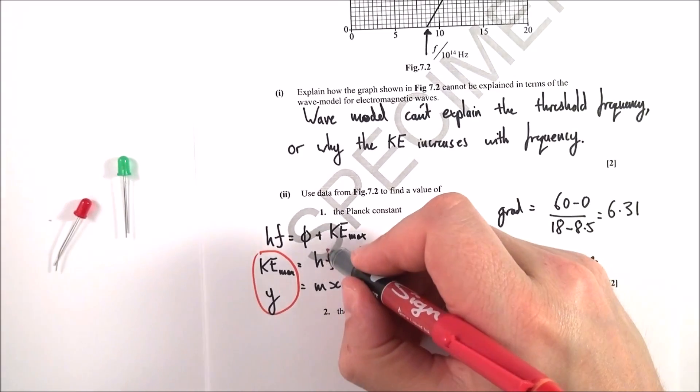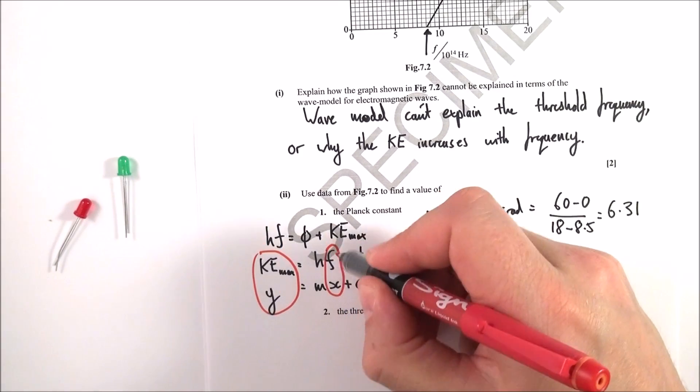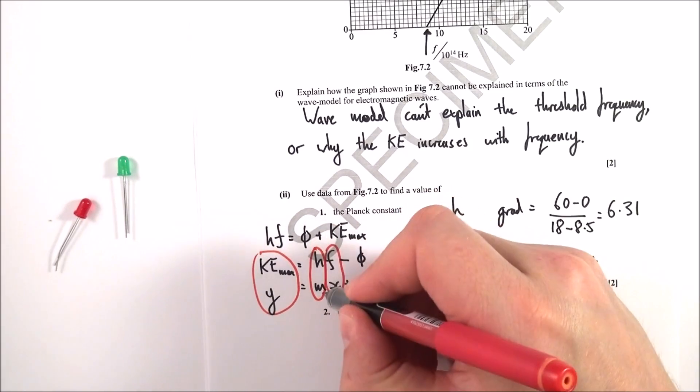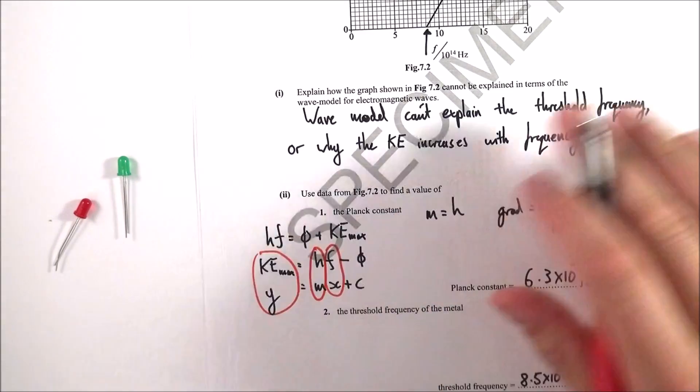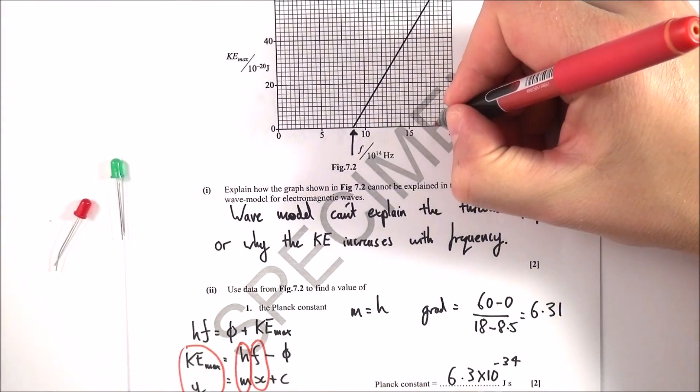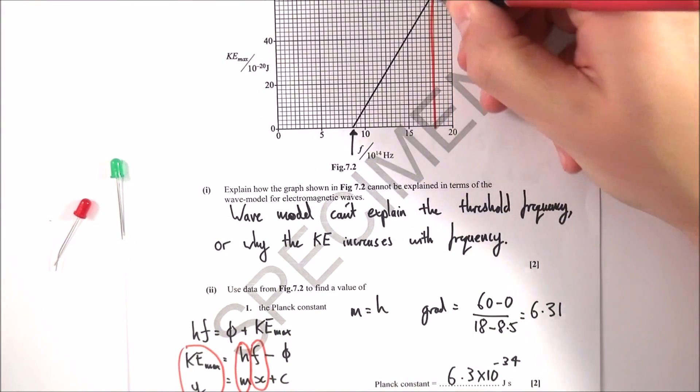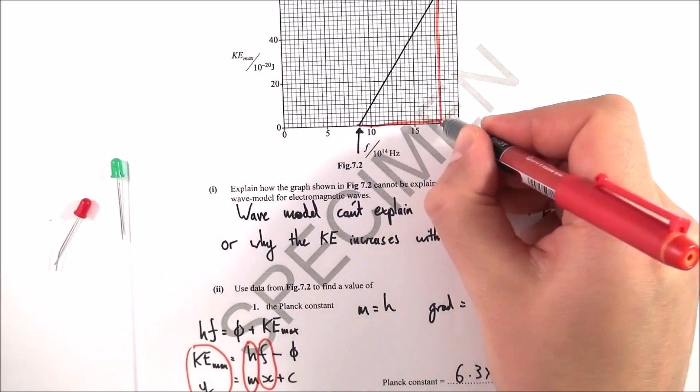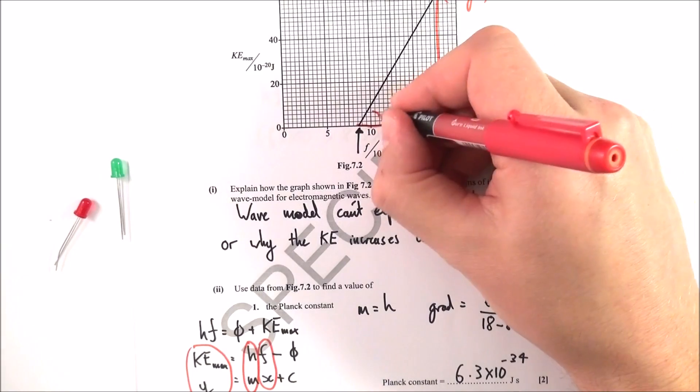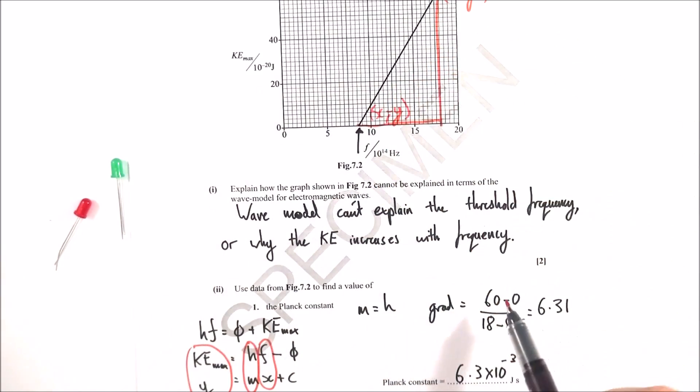Effectively, what we now have is our y value is KE max. The frequency has been plotted on the x-axis, so that's our x value. That means that the gradient m is equal to the Planck constant. You should always draw it using your ruler onto the graph.